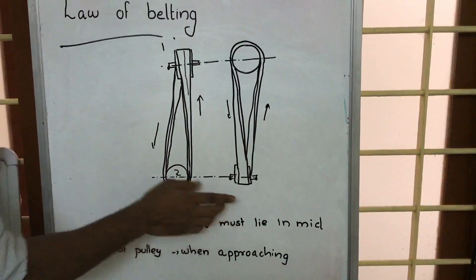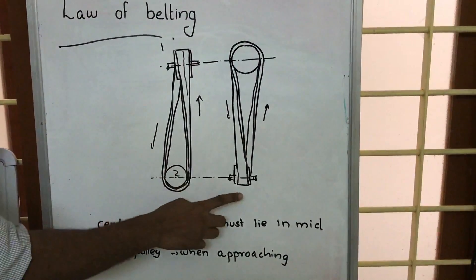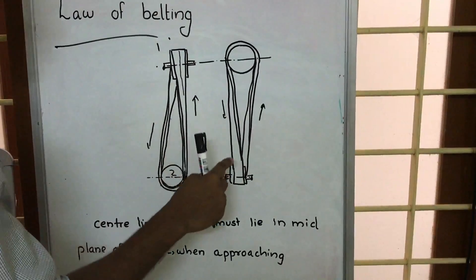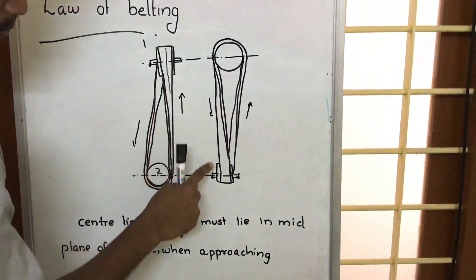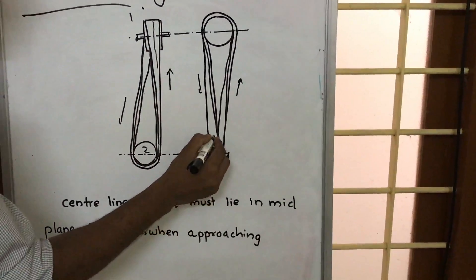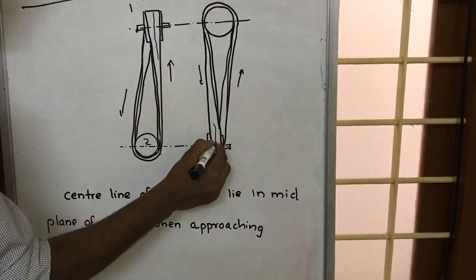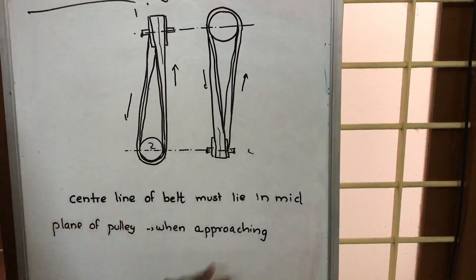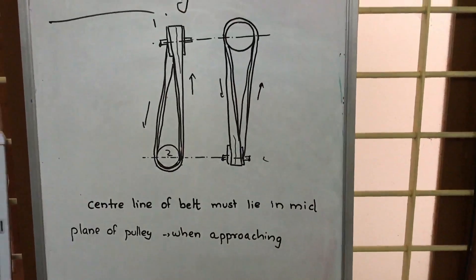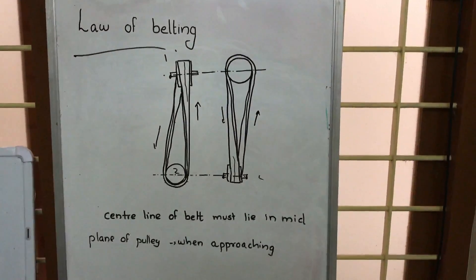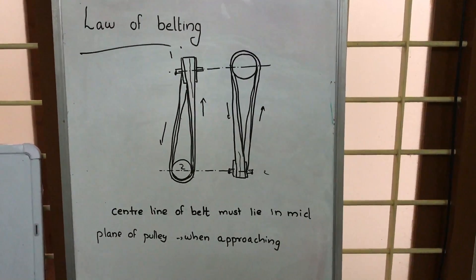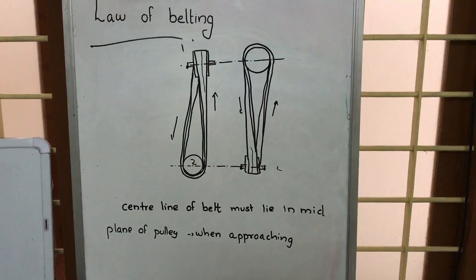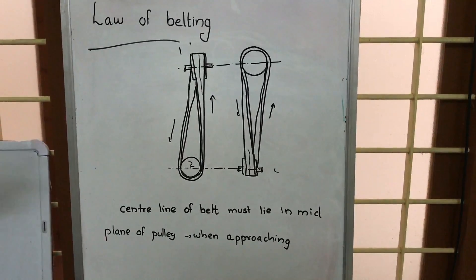Looking at the side view, we can see that when the belt approaches pulley 2, the center line of the belt is in the mid-plane of pulley 2 as well. So the law of belting says: whenever a belt approaches a pulley, the center line of the belt should be in the mid-plane of the pulley.